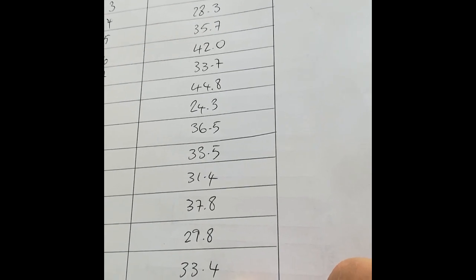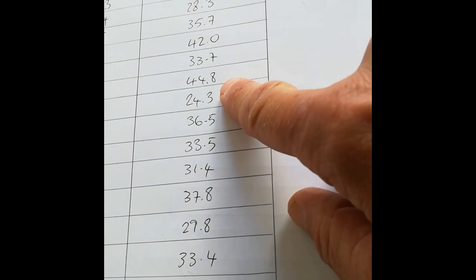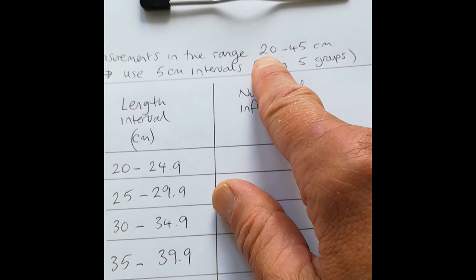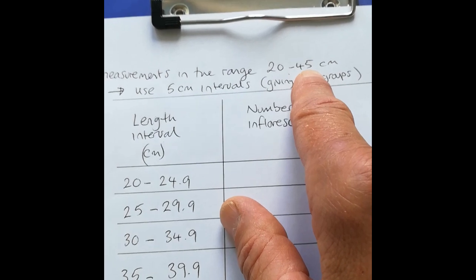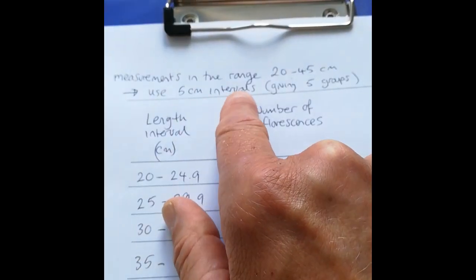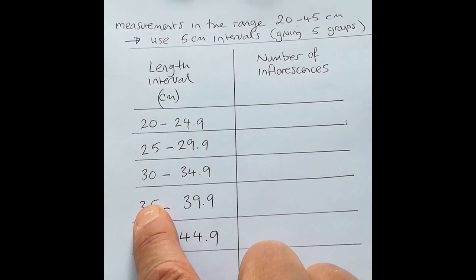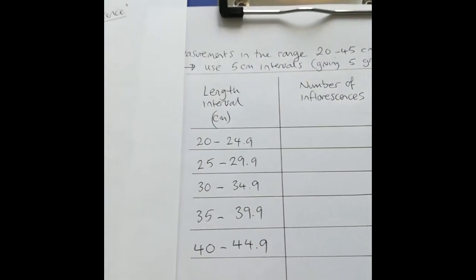The first thing to do is look at the range of values from the minimum value — the smallest, which is 22 cm — up to the biggest, which is 44.8 cm, so the total range of values is within 20 to 45 cm. I'm going to use 5 cm intervals to give me five groups: 20 to 24.9, 25 to 29.9, 30 to 34.9, 35 to 39.9, and 40 to 44.9.